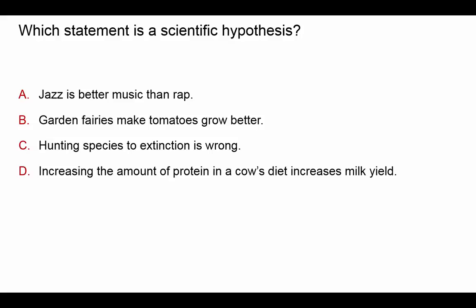Let's read four statements and determine which is a scientific hypothesis. A: jazz is better than rap music. B: garden fairies make tomatoes grow better. C: hunting species to extinction is wrong. Or D: increasing the amount of protein in a cow's diet increases milk yield. The answer is D, because it's the only one that is both testable and falsifiable. A and C are opinions, B is supernatural and can't be tested, so D is the correct scientific hypothesis.